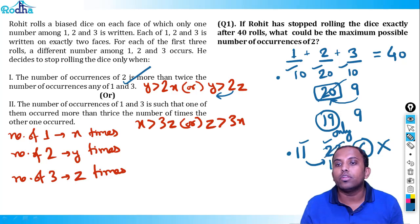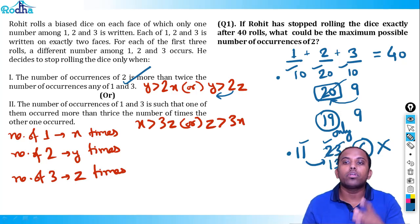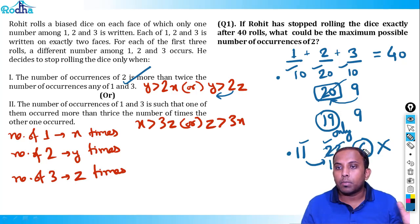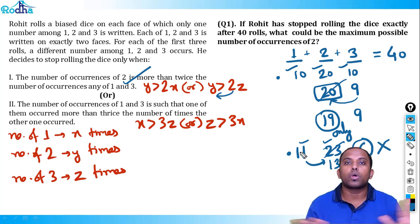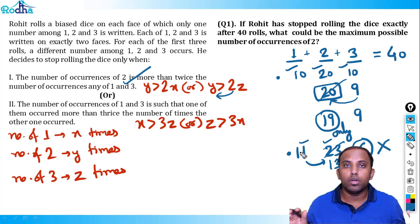So the two cases are: case one with number of 1 = 12, and another case with number of 1 = 9. The answer for question 1 is 19.